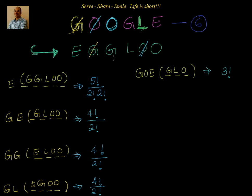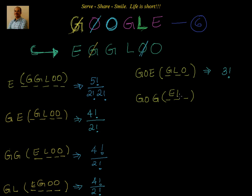Now after G, O, E is over, I will move forward to G, O, G. Because remember, the third letter I want is O. So I have to cross G, O, G and then G, O, L before I can get to G, O, O. So the next one is G, O, G — three slots to take care of, and they need to be filled with E, L, O. That is factorial 3 again, because there are no repetitions.